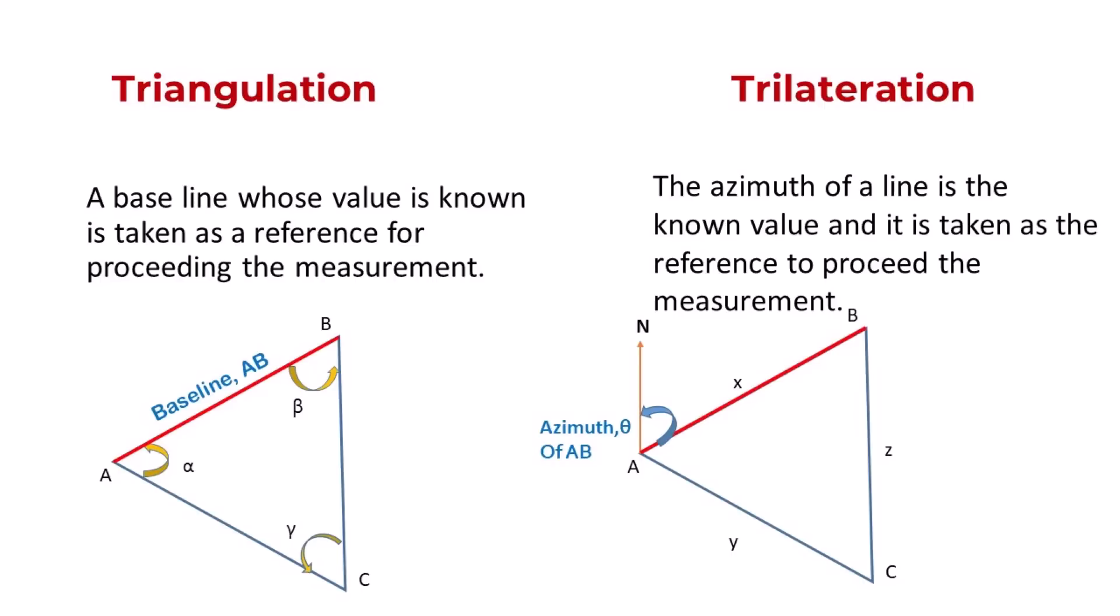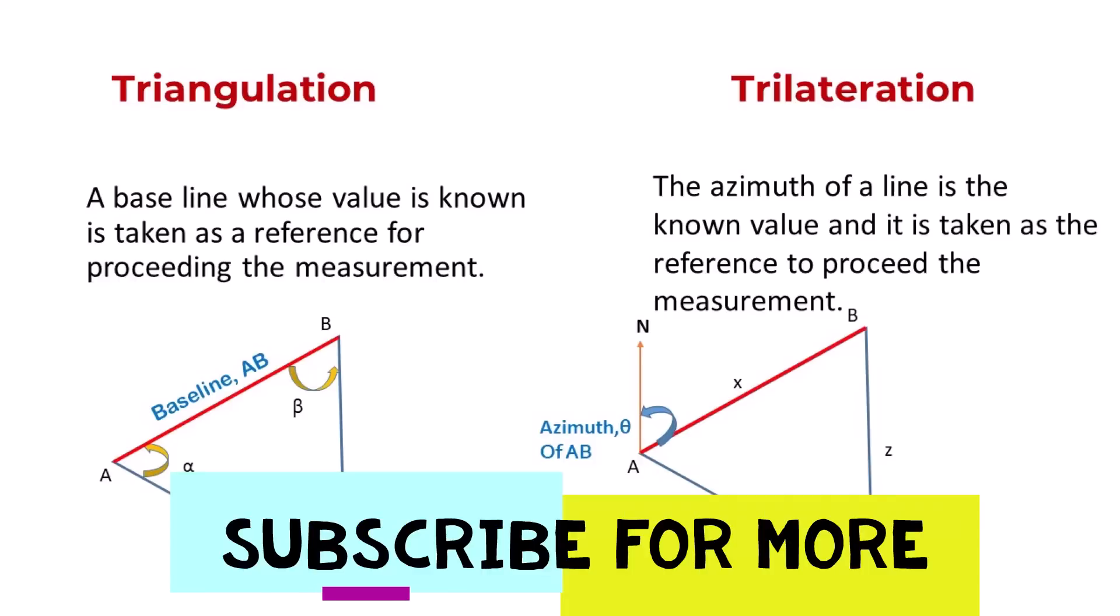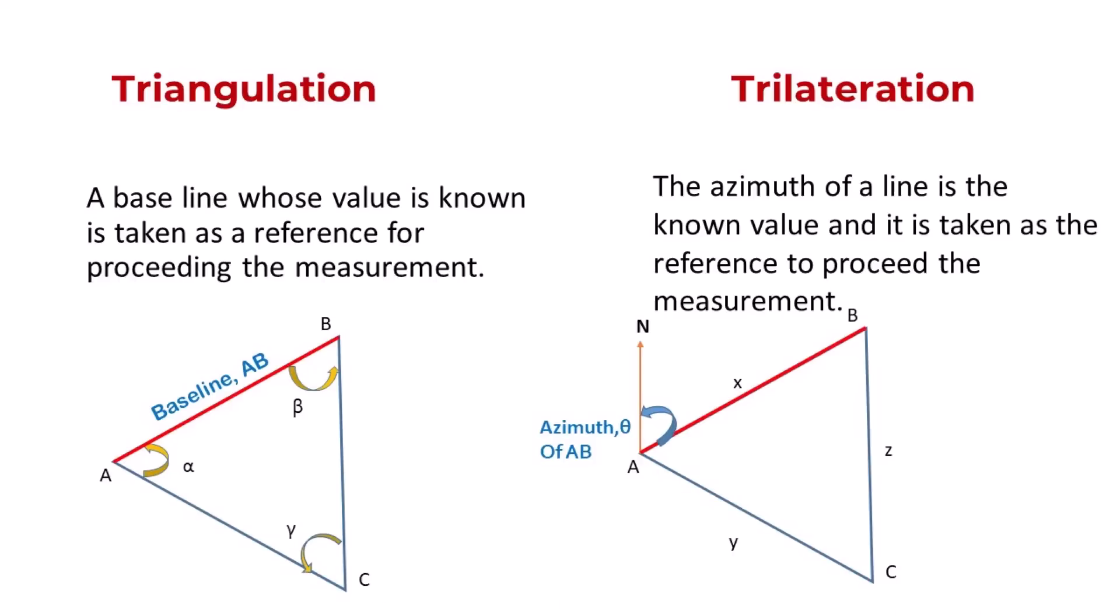While in case of trilateration, the line AB is the baseline whose azimuth is already known, that is theta with respect to the north direction. Once the azimuth of line AB is known, we determine the distances X as well as Z using an instrument to measure distance.